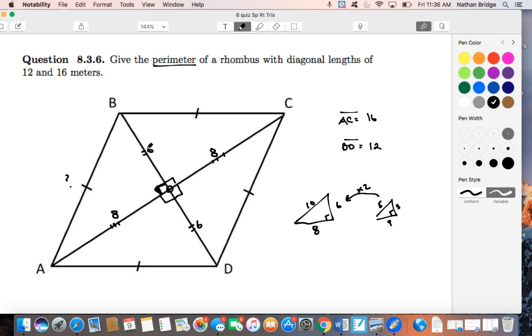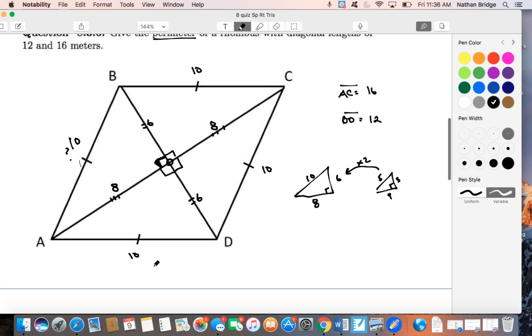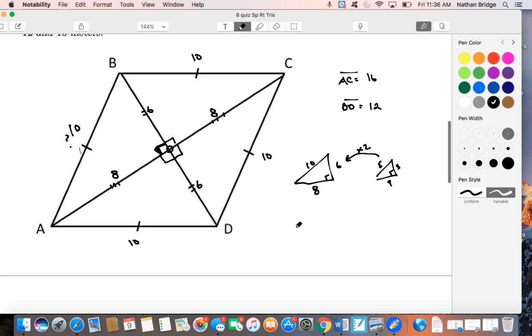Okay, so that being said, here's our right triangle, 6, 8, which means that this remaining hypotenuse is 10, which means that BC is 10, CD is 10, and AD is 10. So 4 times 10, the perimeter is going to be equal to 40. There we go.